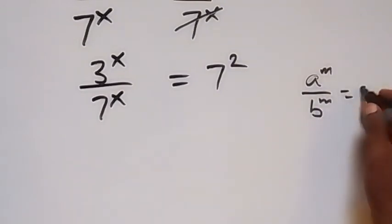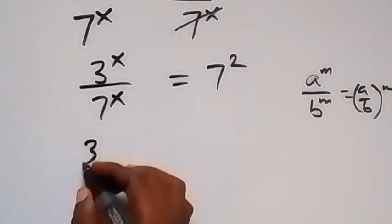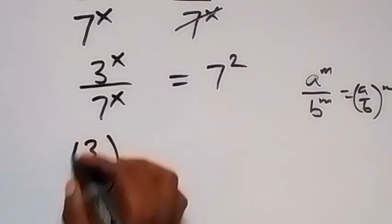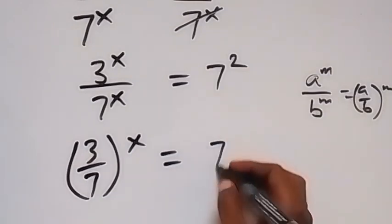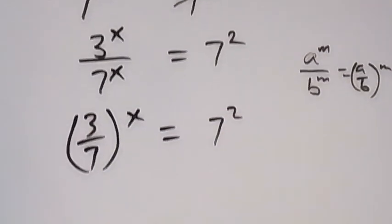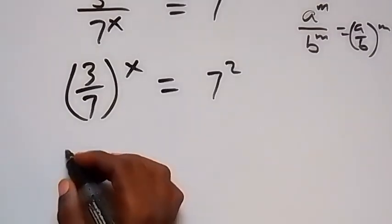When we apply this law here, this becomes 3 over 7 raised to power x, which equals—we can still leave this as 7 squared. Then when we look at this, we can take the log on both sides.